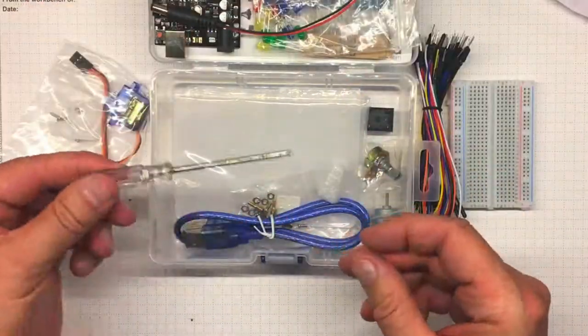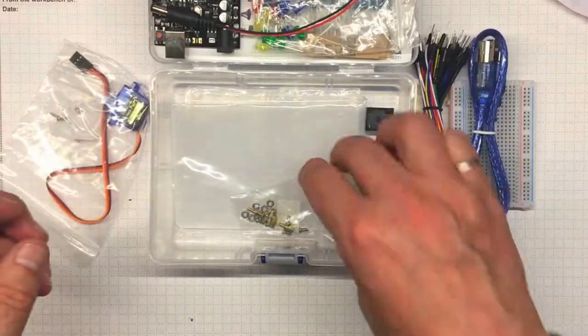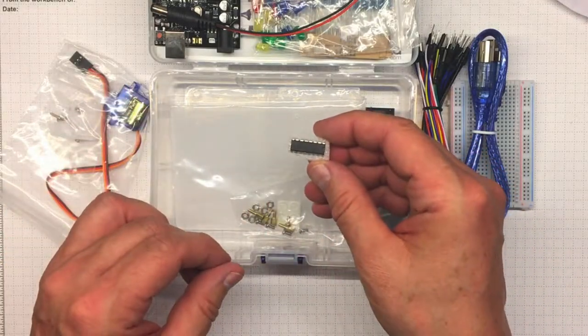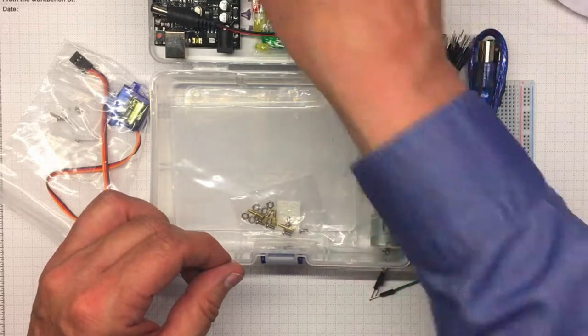Battery connector, screwdriver, and cable, plus this IC which is definitely not the INA-125 amplifier we'll be using later on in the course.